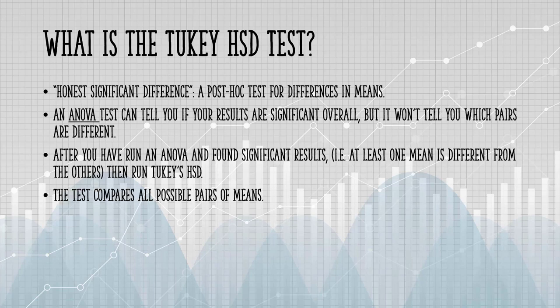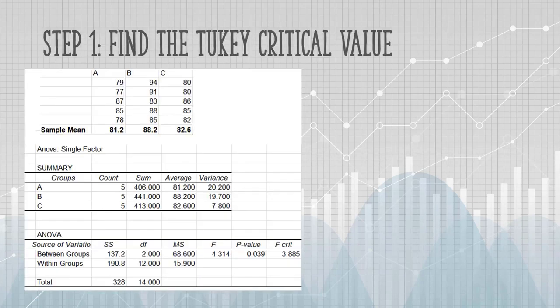Tukey's Test will compare all possible pairs of means. So here's our ANOVA output. We have a significant difference at the 5% alpha level. Our p-value is 0.039, which gives us a significant result.